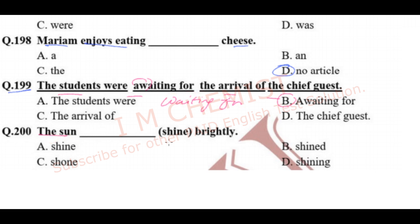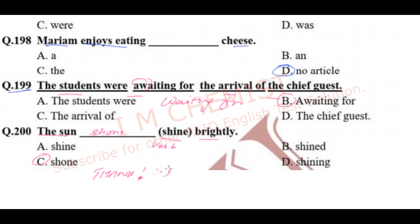Question number 200: 'The sun shone brightly.' We have been given the verb in brackets, so we have to choose the correct form. Option C is correct — 'shone'. That's all for today; see you soon with another test. Stay tuned with I Am Chemist. Allah Hafiz.